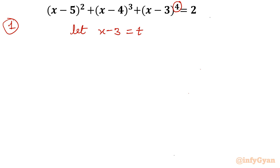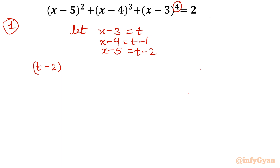Once x-3 = t, then x-4 will be t-1 and x-5 will be t-2. So the equation becomes (t-2)² + (t-1)³ + t⁴ = 2.